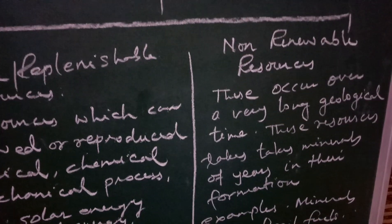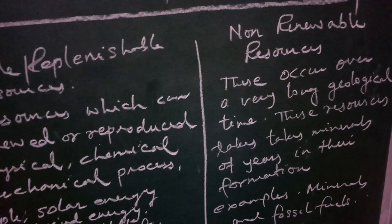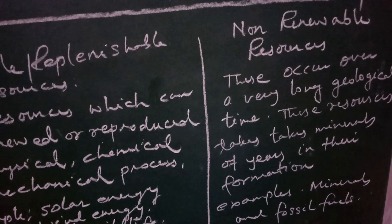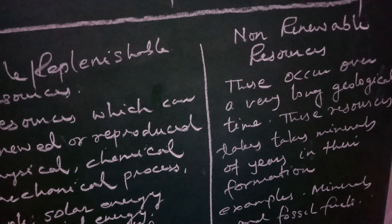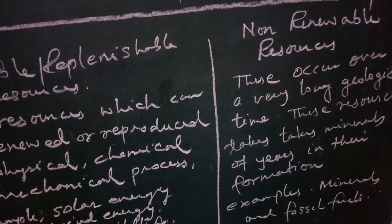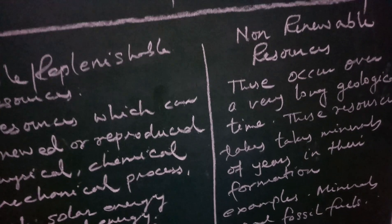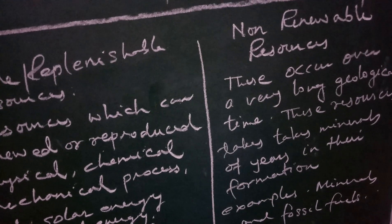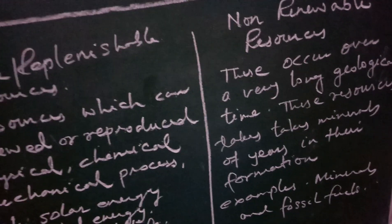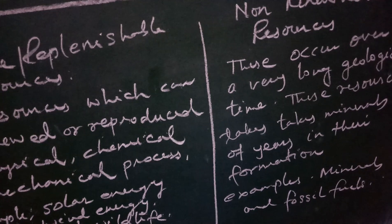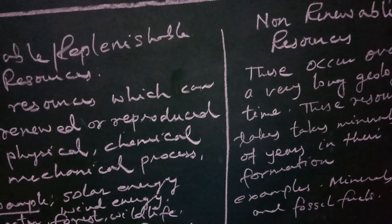Non-renewable resources occur over a very long geological time — they take millions of years in their formation. Non-renewable resources are either not renewed or their formation takes millions of years. Examples are minerals and fossil fuels.